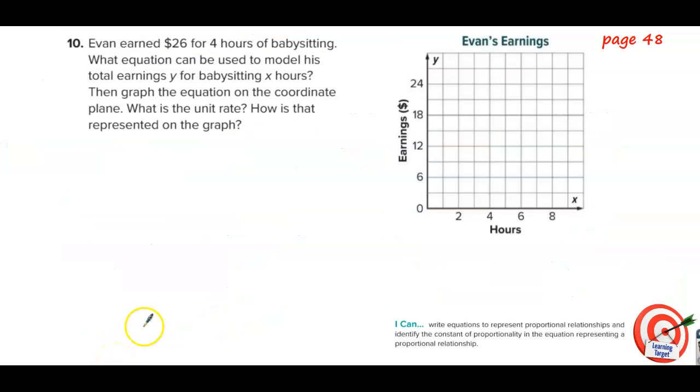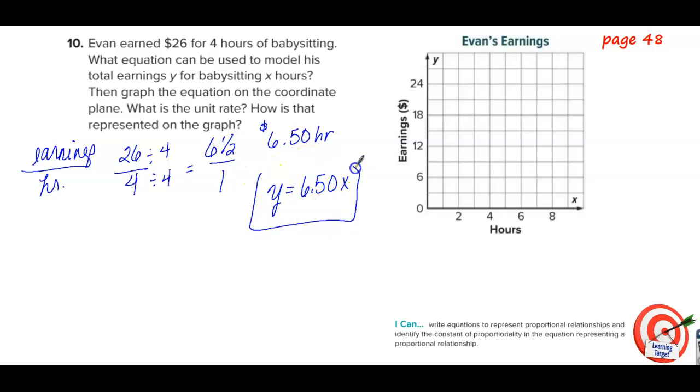Evan earned $26 for four hours of babysitting. What equation can be used to model this total earnings y for babysitting hours x? So we have earnings over hours, or money per hour. He's getting $26 for four hours. If we divide top and bottom by four, 26 does not divide evenly by four. Gives us six and a half. So he's charging $6.50 maybe per hour. We could write it that way. Money is usually in decimal form. So our equation is going to be y equals $6.50x. You can leave the zero in because it looks like money or you can take it out. It doesn't matter. But that's the equation that represents his babysitting.